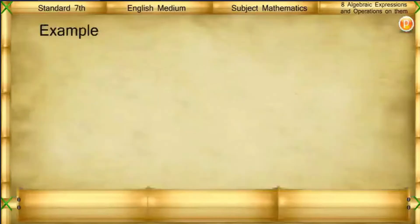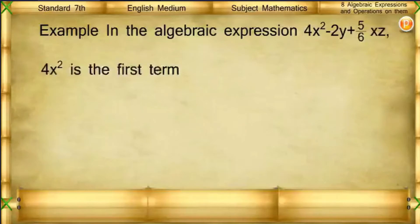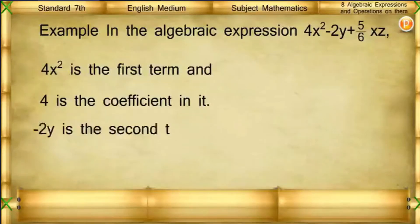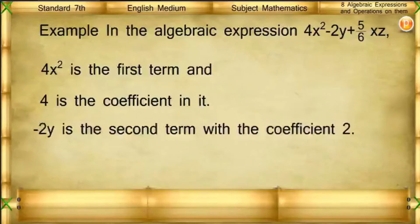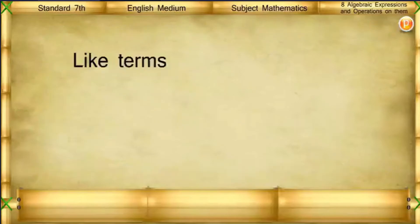Example: In the algebraic expression 4X squared minus 2Y plus 5/6 XZ — 4X squared is the first term and 4 is the coefficient in it. Minus 2Y is the second term with coefficient minus 2. 5/6 XZ is the third term and 5/6 is the coefficient in it.